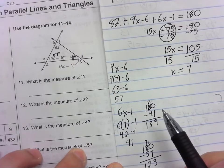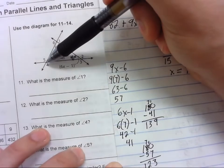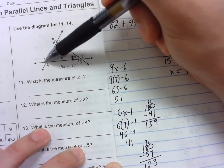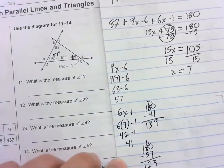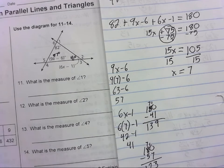And the measure of angle 5. We don't need to do any work here because we know the relationship between 4 and 5. They're vertical, which means they're congruent. So 4 is 123, 5 is also 123.